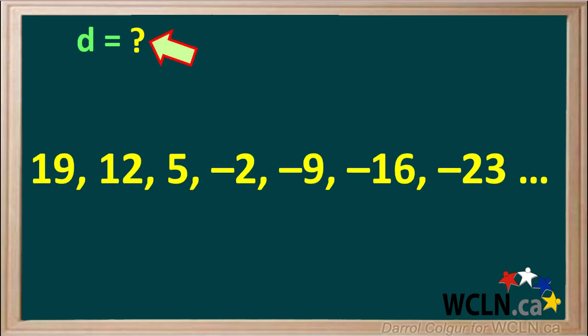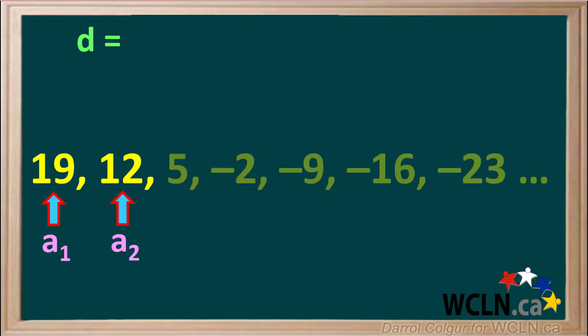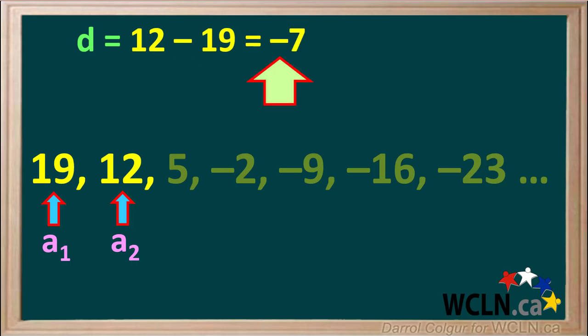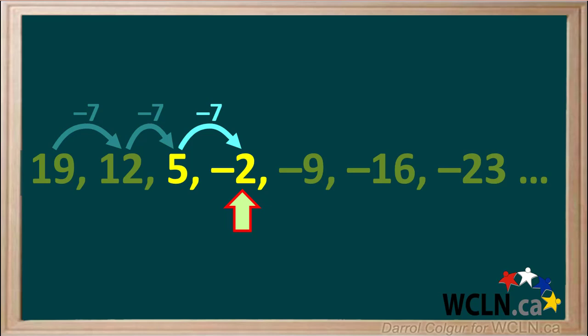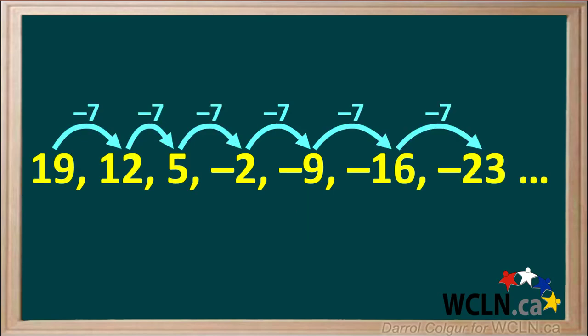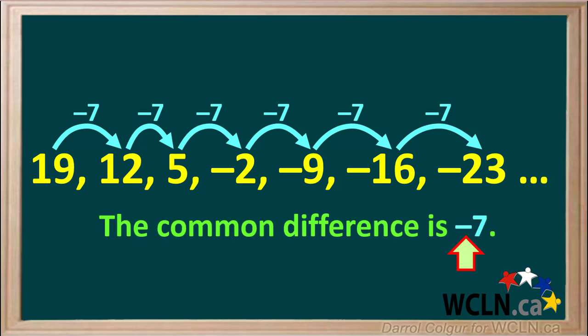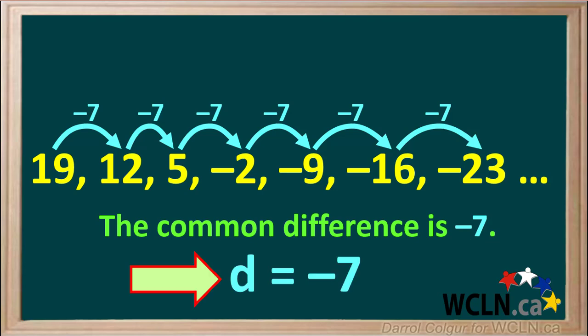Here's another sequence. Pause the video and see if you can find the common difference d for this sequence, then resume and check your answer. Term a2 is equal to 12 and term a1 is equal to 19. To find d, we subtract the first term from the second term: 12 minus 19, which comes out to negative 7. Checking: adding negative 7 to each term gives the next — 12 plus negative 7 equals 5, 5 plus negative 7 equals negative 2, negative 2 plus negative 7 equals negative 9. So the common difference is negative 7, and d is equal to negative 7.